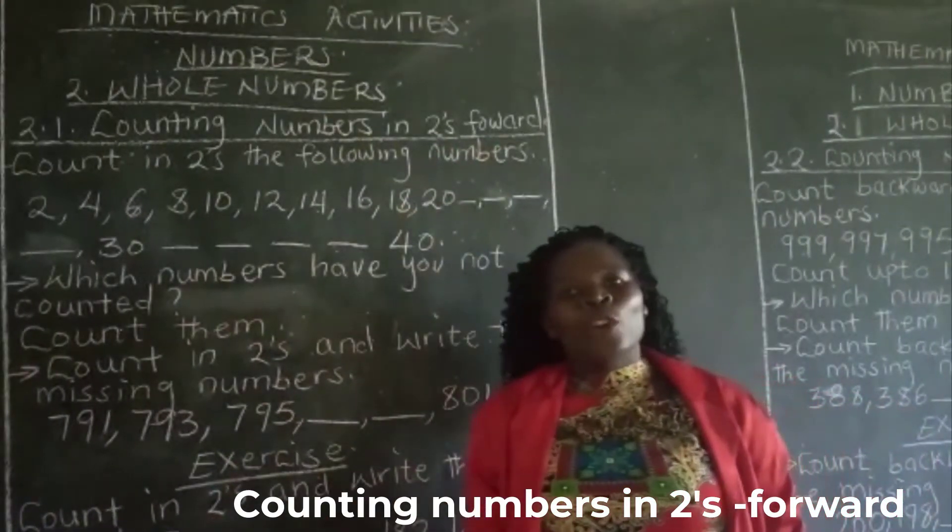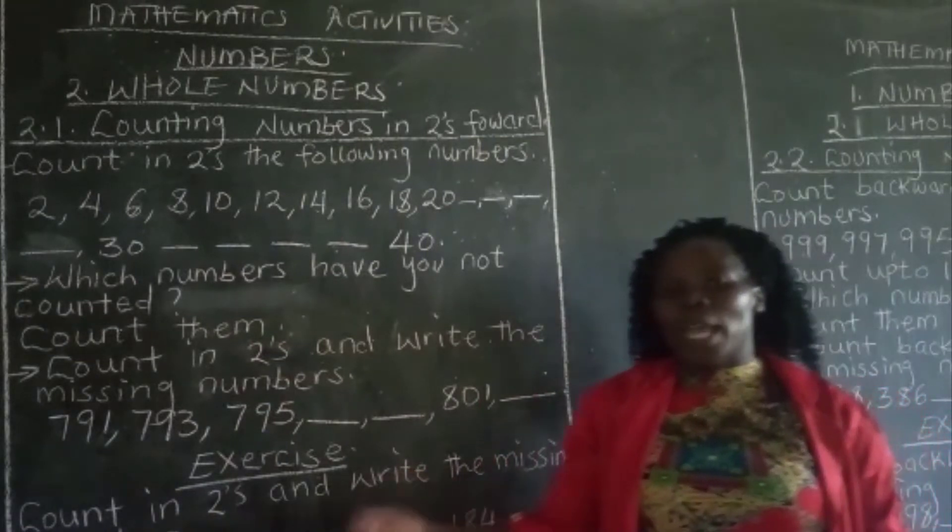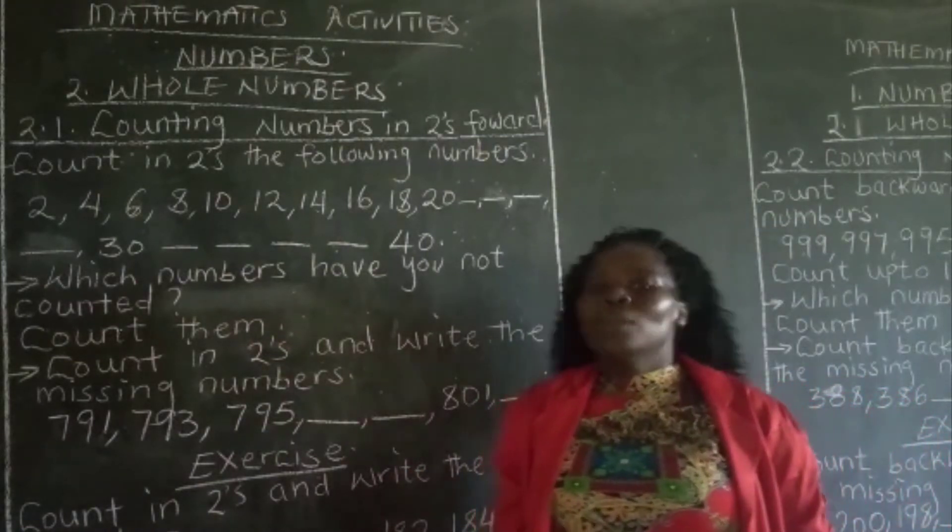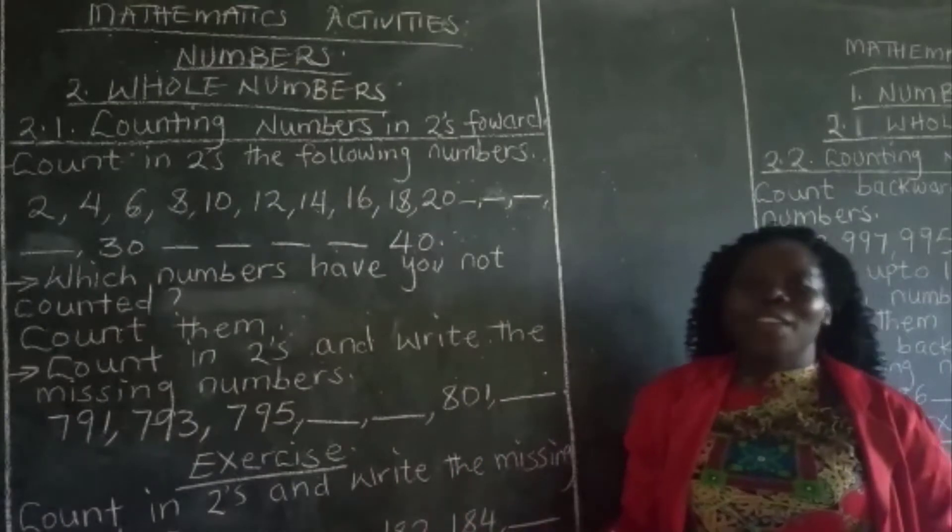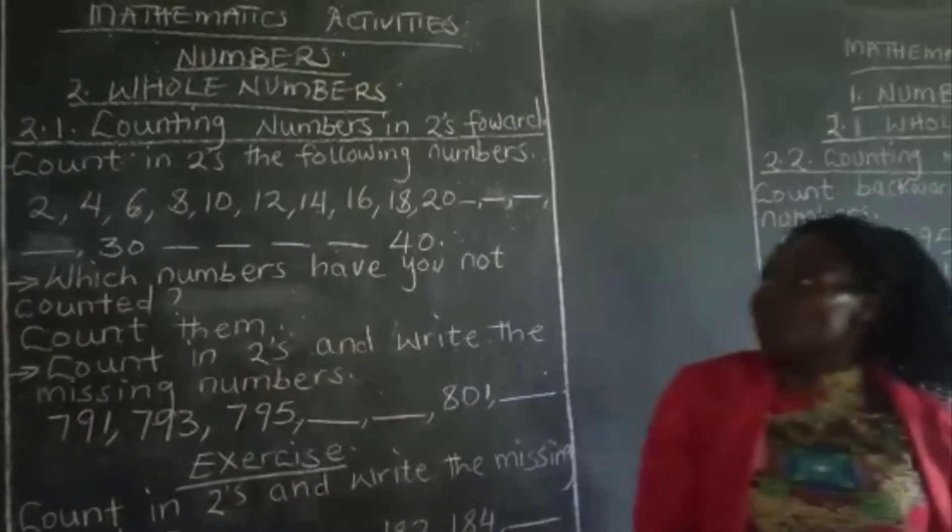Under whole numbers we shall look at counting numbers in twos forward. Learners, I know you know how to count numbers from 1 to 3, that is in ones. 1, 2, 3, 4, 5, 6. So today we shall look at counting numbers in twos.